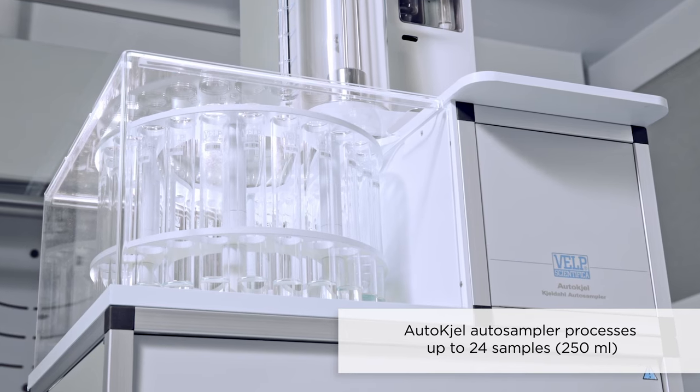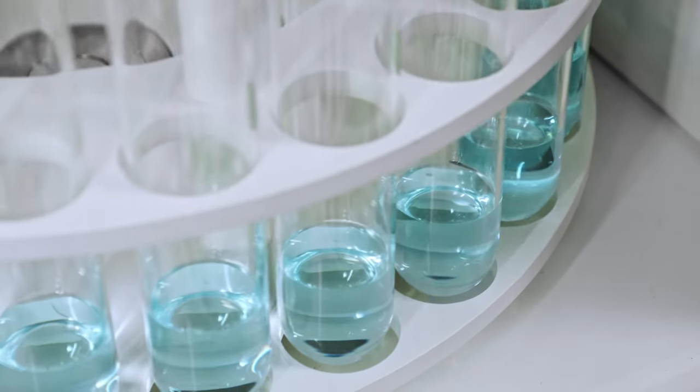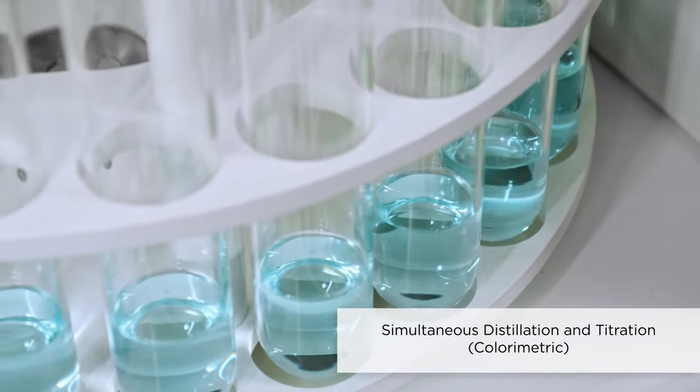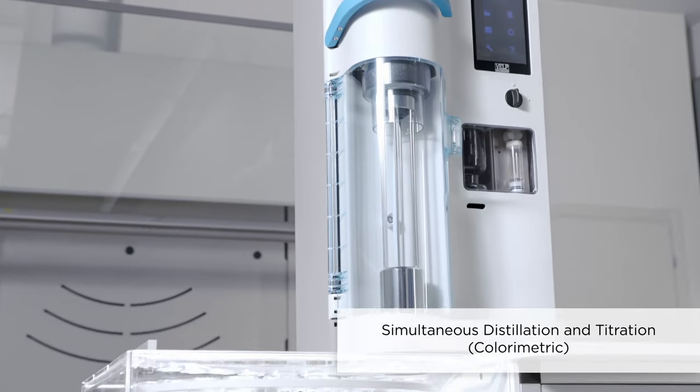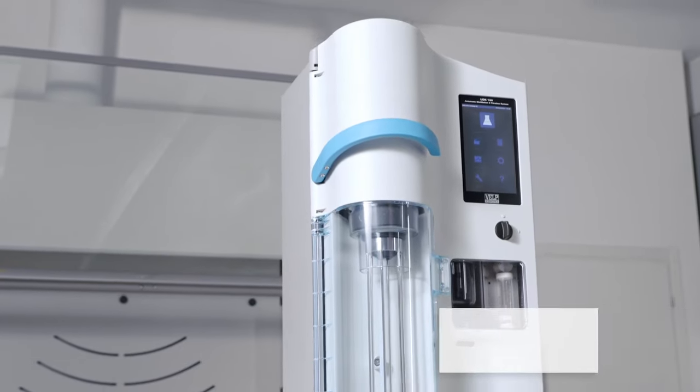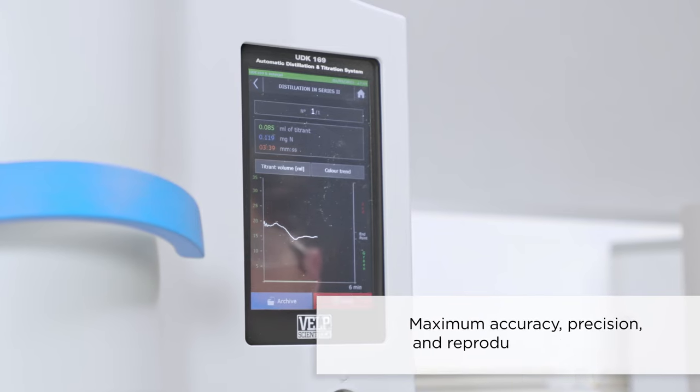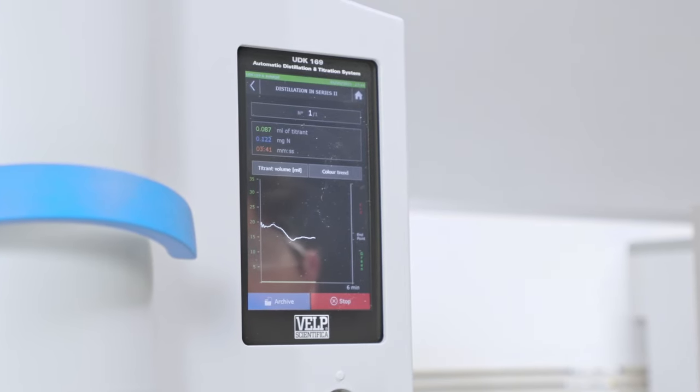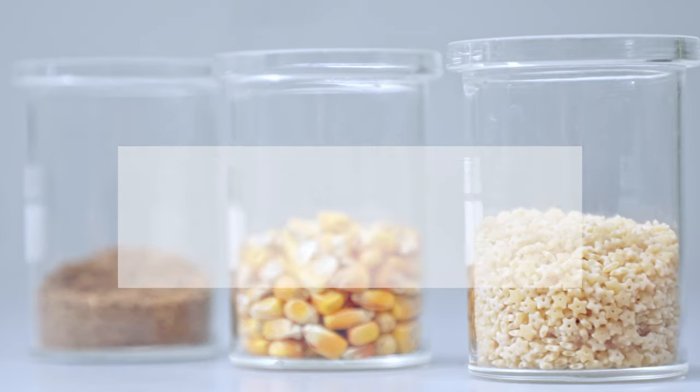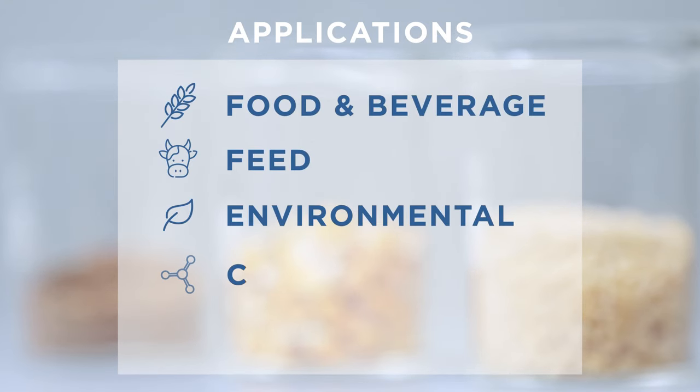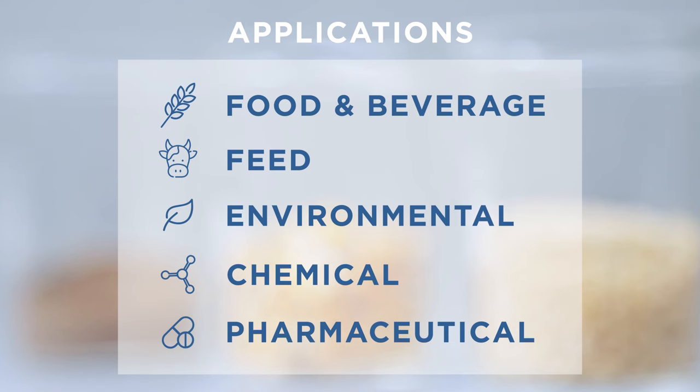In combination with the AutoKjel AutoSampler, it ensures the shortest time to results with simultaneous distillation and titration via an integrated colorimetric titrator. The UDK169 provides maximum accuracy, precision, and reproducibility of results on a wide range of samples in the food, feed, environmental, chemical, and pharmaceutical industries.